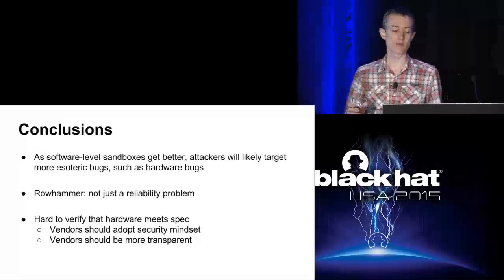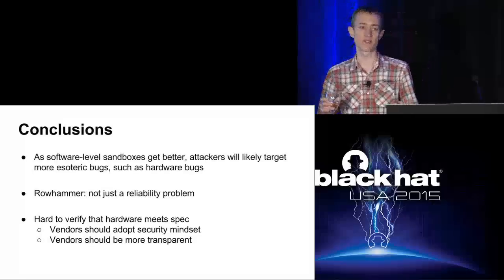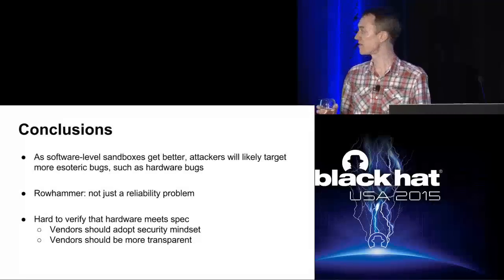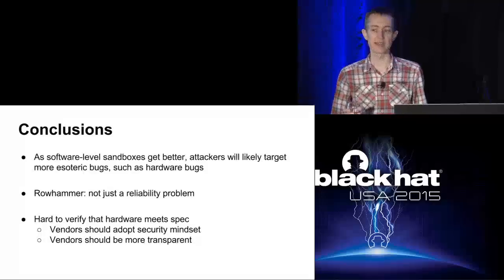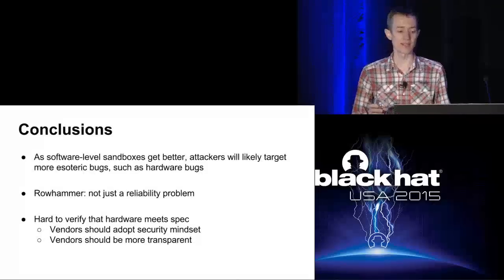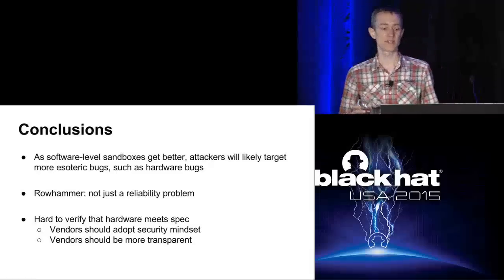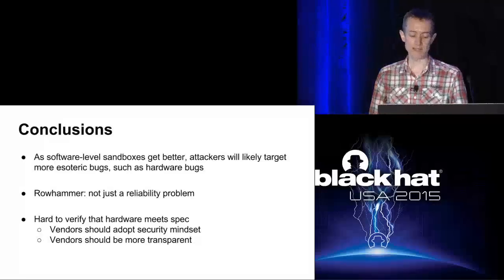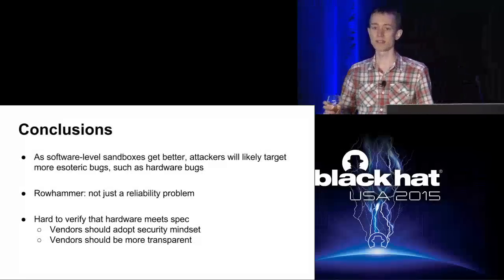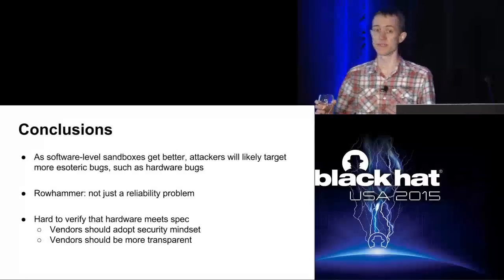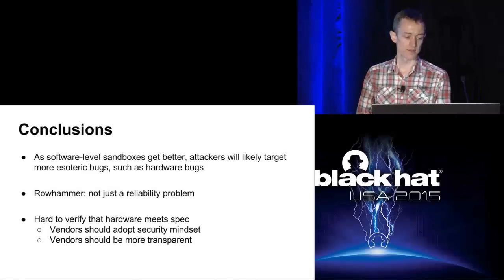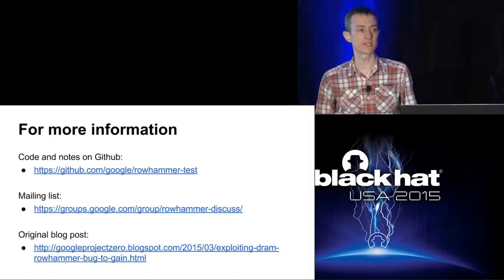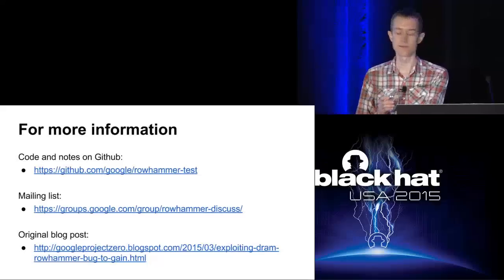To conclude: there are some software bugs that are easier to exploit than row hammer, but as software-level sandboxes are getting better, attackers may turn to exploiting more esoteric bugs like row hammer. We have seen multiple times that row hammer can be easier to exploit than it initially seems. This is unusual for being a hardware bug - normally the hardware can hide physics-level issues like charge leaking, but occasionally hardware manufacturers push things too far. Vendors haven't been terribly open about row hammer. I would like to see vendors be more open and adopt a security mindset when thinking about issues that appear to be just reliability issues, because we've shown they can actually break multiple layers of security. We have test code on GitHub, a mailing list for discussing the problem, and the Project Zero blog post.